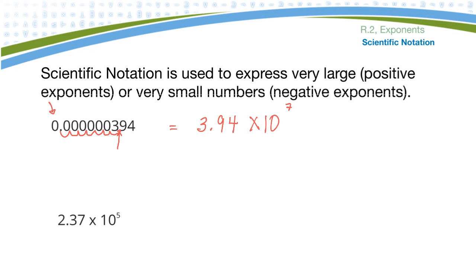To tell whether you should have a positive seven or a negative seven, you just look at the number. If it's a very small number it has to be negative; if it's a very large number it'll be positive. Here I already have a number written in scientific notation. If they want it in standard notation, I have to move the decimal however many places the power of ten says. If it's a positive five, I have to get a big number, so I'm going to move the decimal five places to the right.